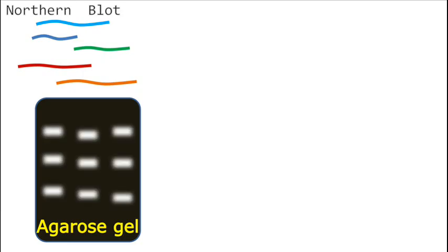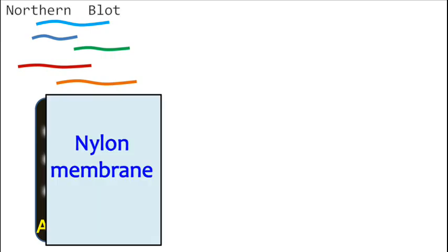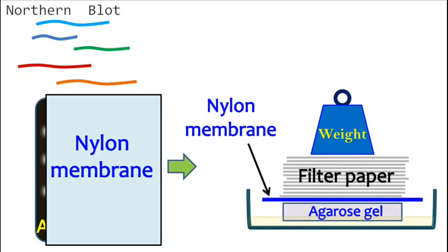The RNA separated in the gel is transferred to the nylon membrane. For this purpose, the nylon membrane is placed on the gel and filter papers are placed on top. The gel is then transferred in the buffer. Due to capillary action, the filter paper absorbs the buffer and the RNA present in the gel binds the nylon membrane.